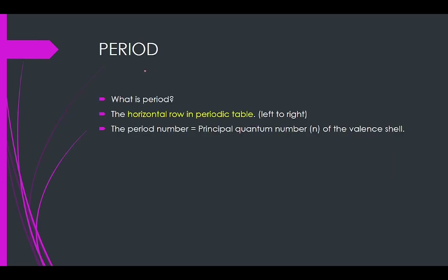So what is a period in the periodic table? It is actually horizontal in the periodic table, from left to right, and the period number is actually equal to n, the principal quantum number of the valence shell.